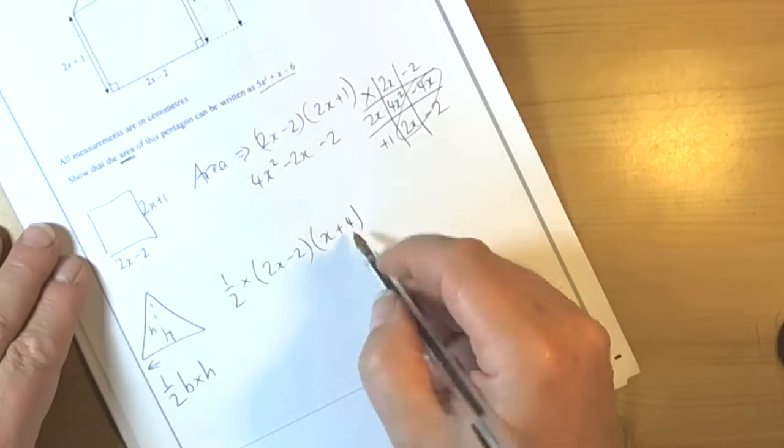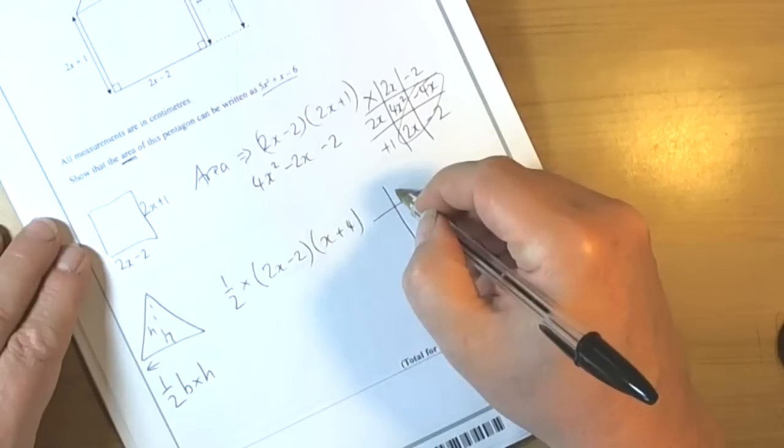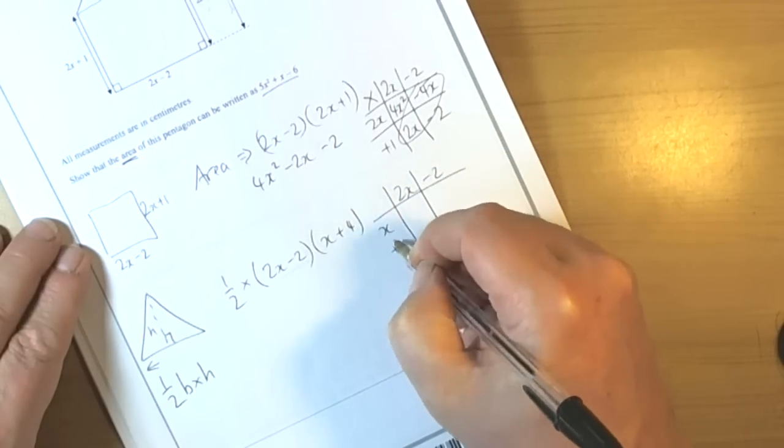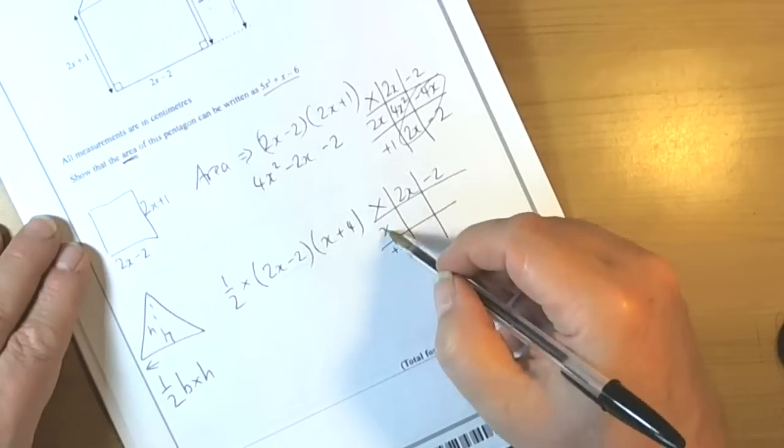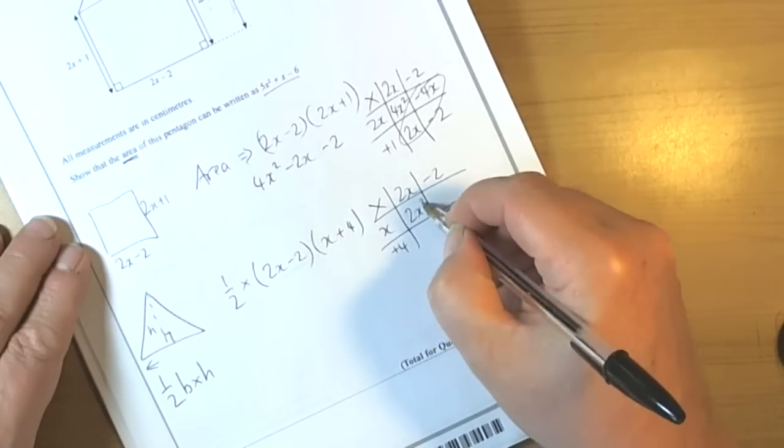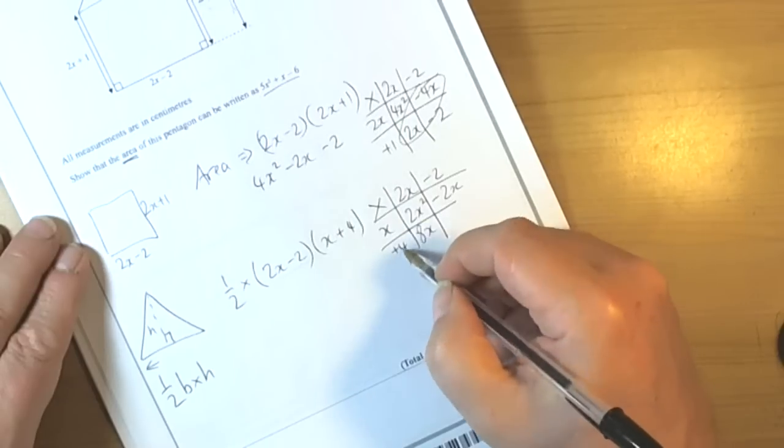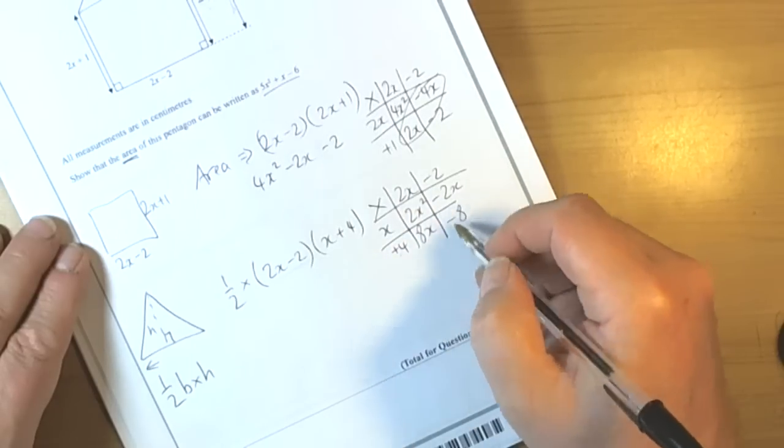Again we need to multiply these two brackets so we've got 2x take away 2, times x plus 4. So 2x times that is 2x squared, x times negative 2 is negative 2x, 4 times 2x is 8x and 4 times negative 2 is negative 8.